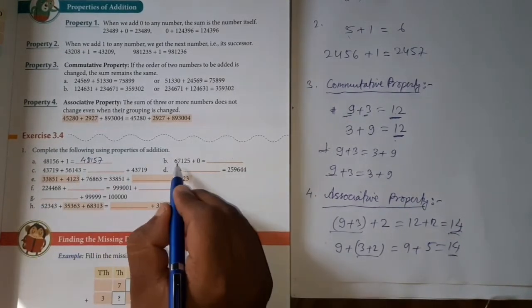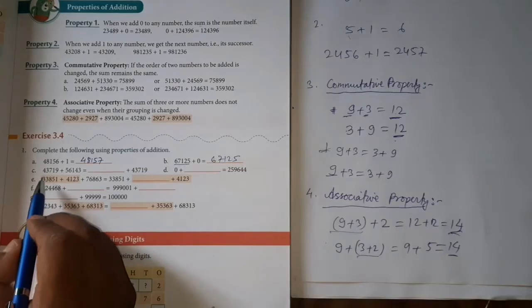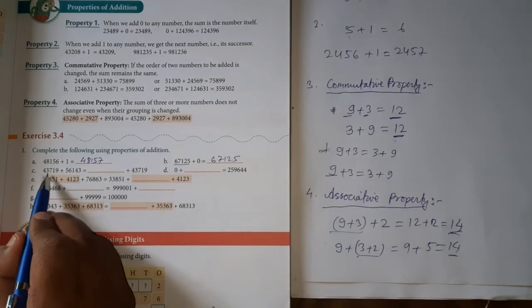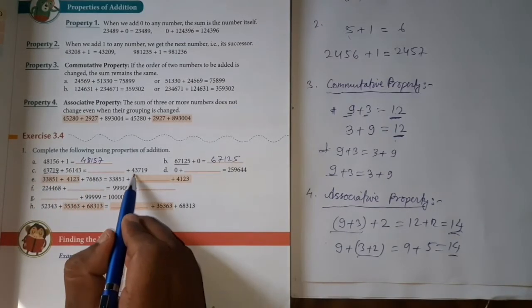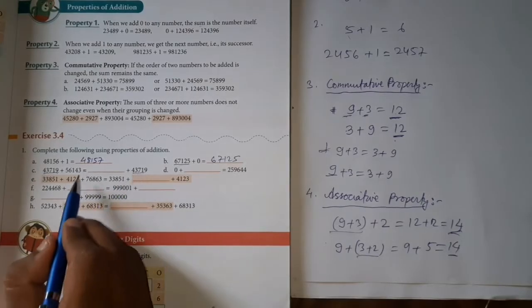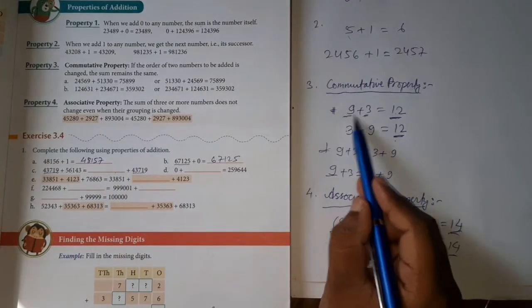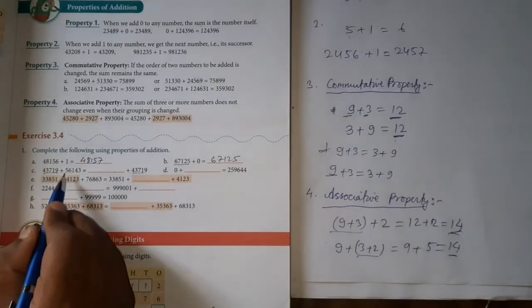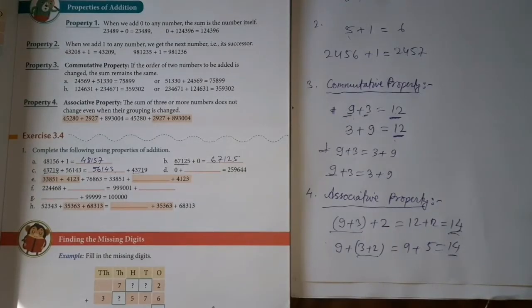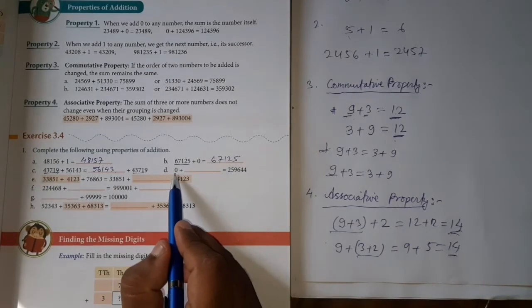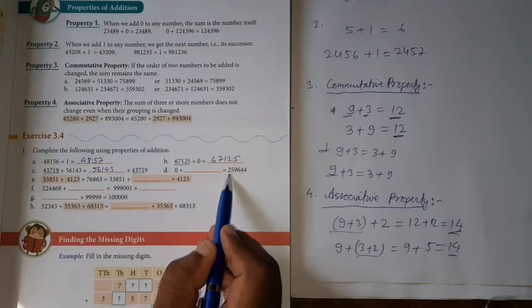When you add zero to a number, the answer will be the number itself. So what will happen here? The same number: 270,025. Then look here, 43,719 is on the left side of two, and this number is also given here. So what will happen here? 56,143. Is it okay or not? And see here, when you add zero to a number, the answer will be the number itself. So what will happen here? The same number: 2,59,644.